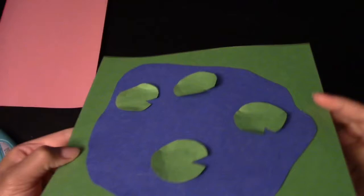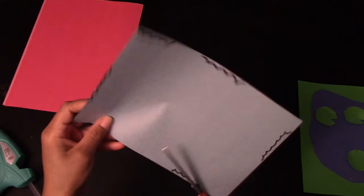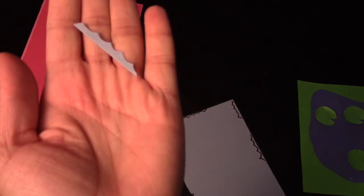For the water, you're going to take your light blue paper and on the edge of it draw a scooped line shape. Go ahead and cut them out, and they should look like this when you cut them out.